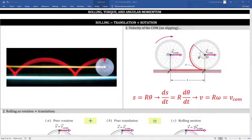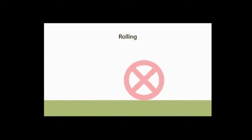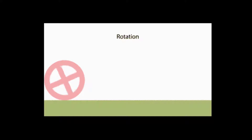Chapter 11: Rolling, Torque, and Angular Momentum. Let's start with rolling. Rolling is a special kind of motion. You can think about rolling two different ways. One way is to think of rolling as a combination of rotational motion and translational motion. We've studied rotational kinematics and we've studied translational kinematics. Blend them together and you get rolling.